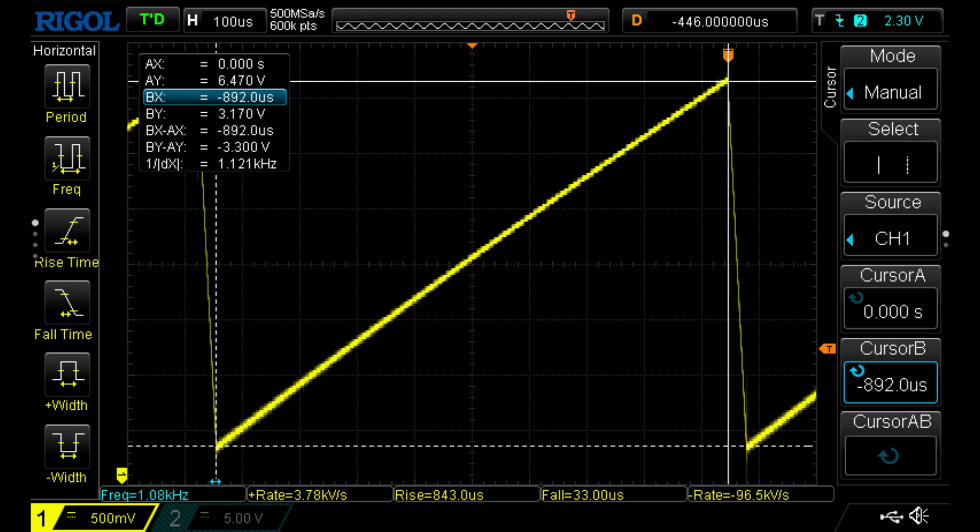A couple of things to note are: The ramp starts at 3.17 volts DC and the hypotenuse of the ramp appears to be very slightly bowed outwards in a convex fashion.